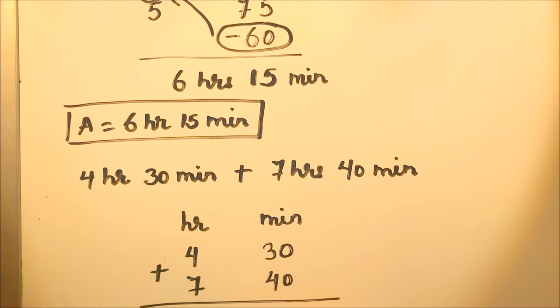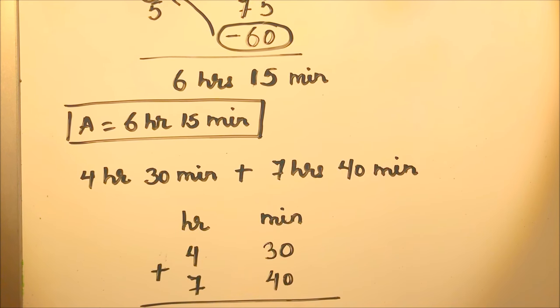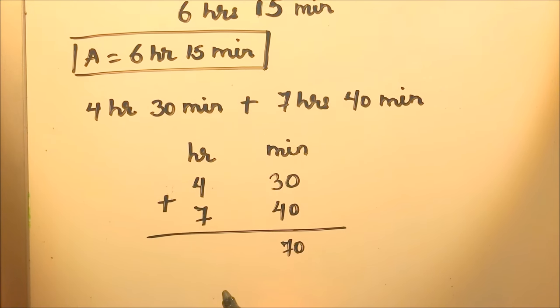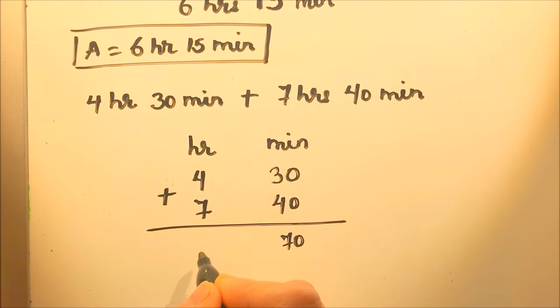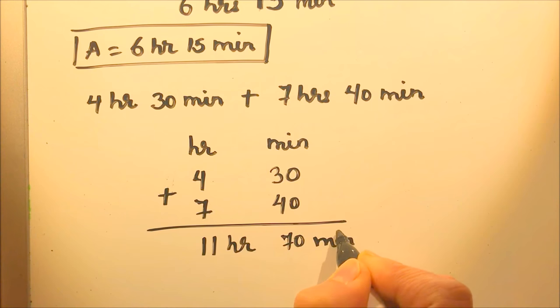So here 30 plus 40 is 70, 70 is again more than 60 and this is 4 plus 7 is 11. So 11 hours, 70 minutes.